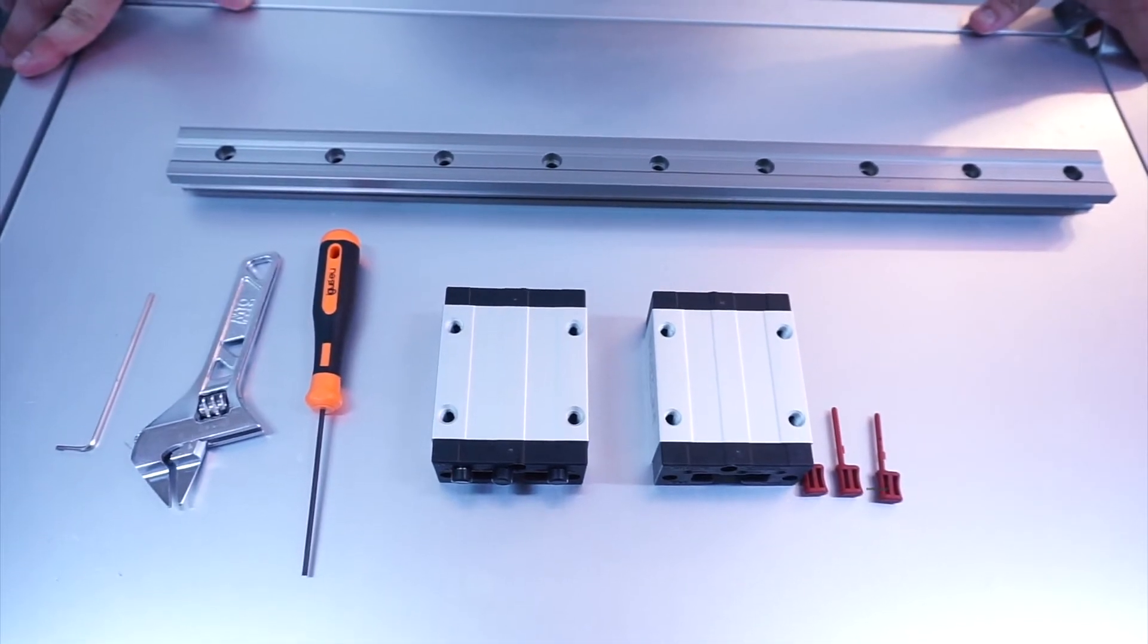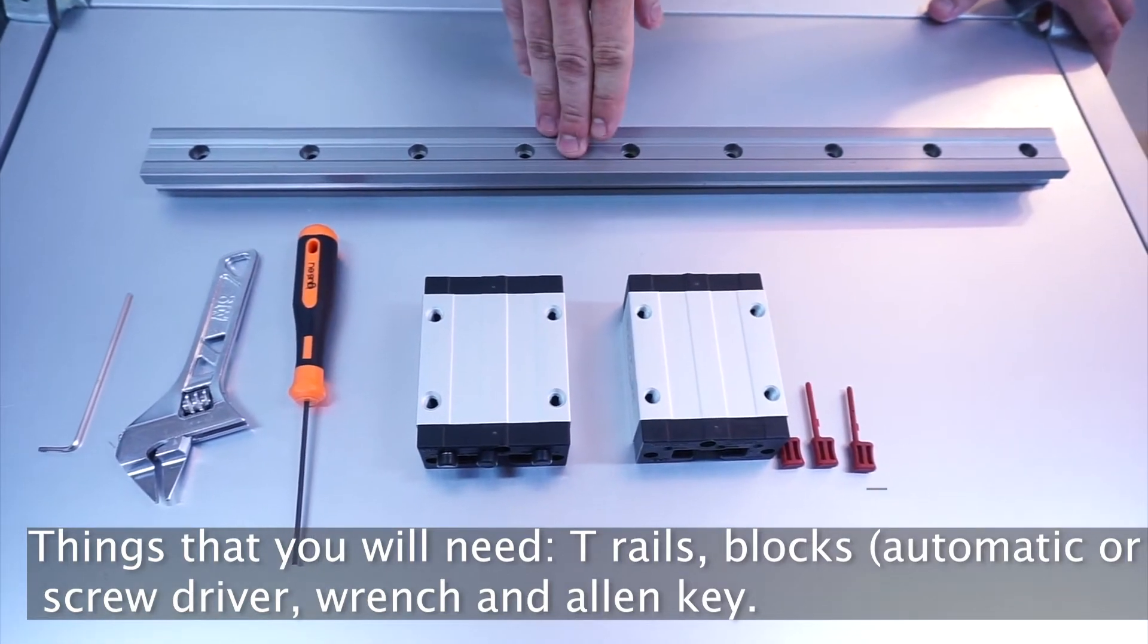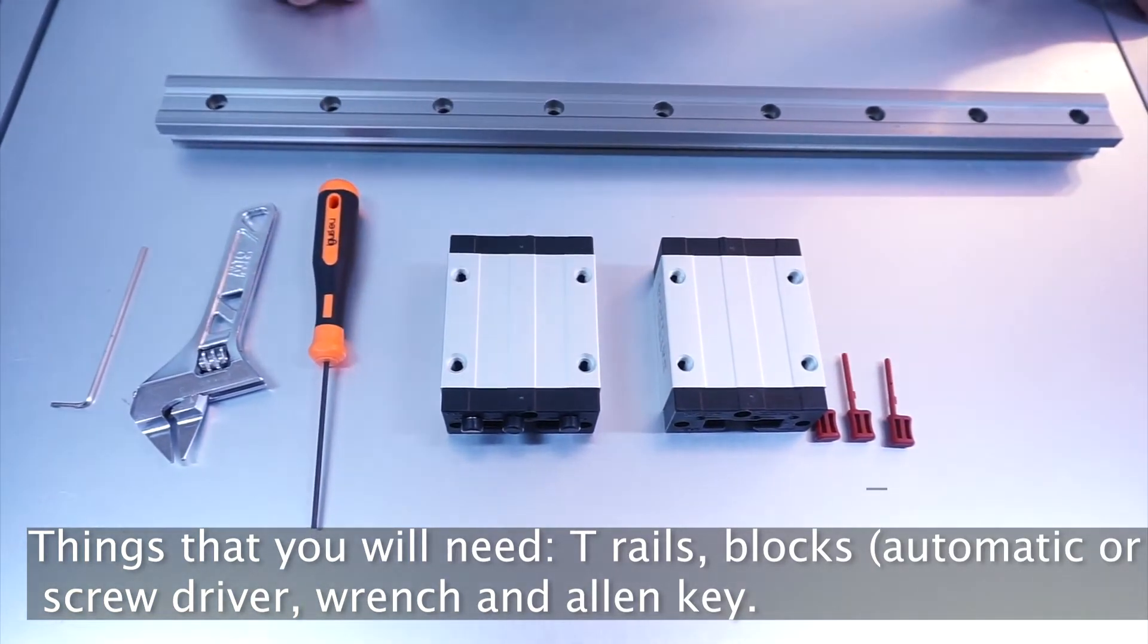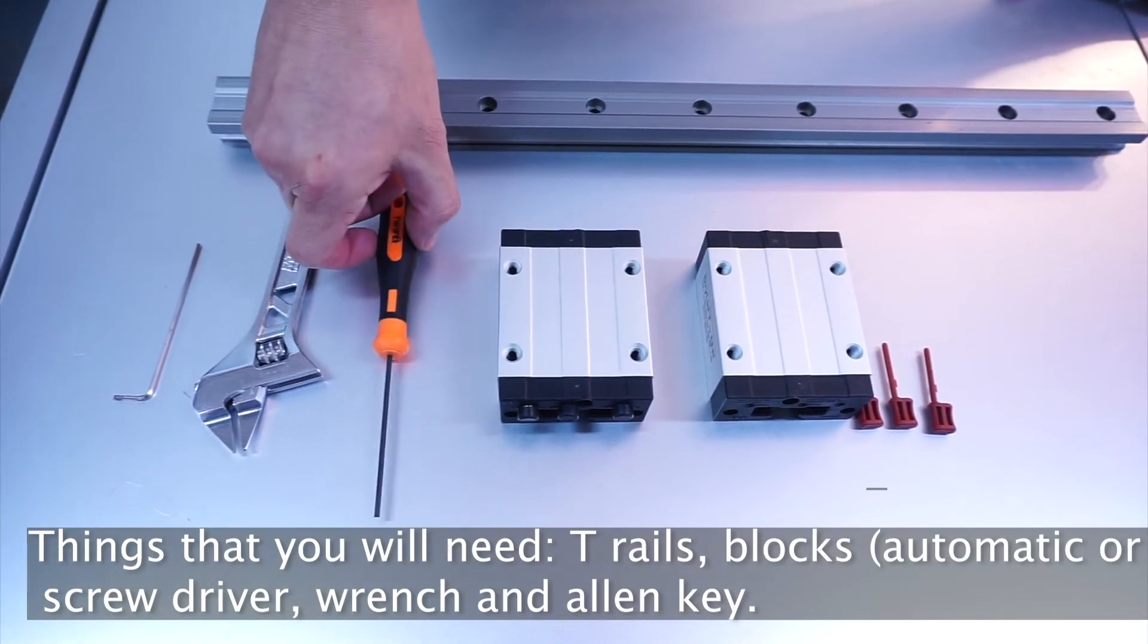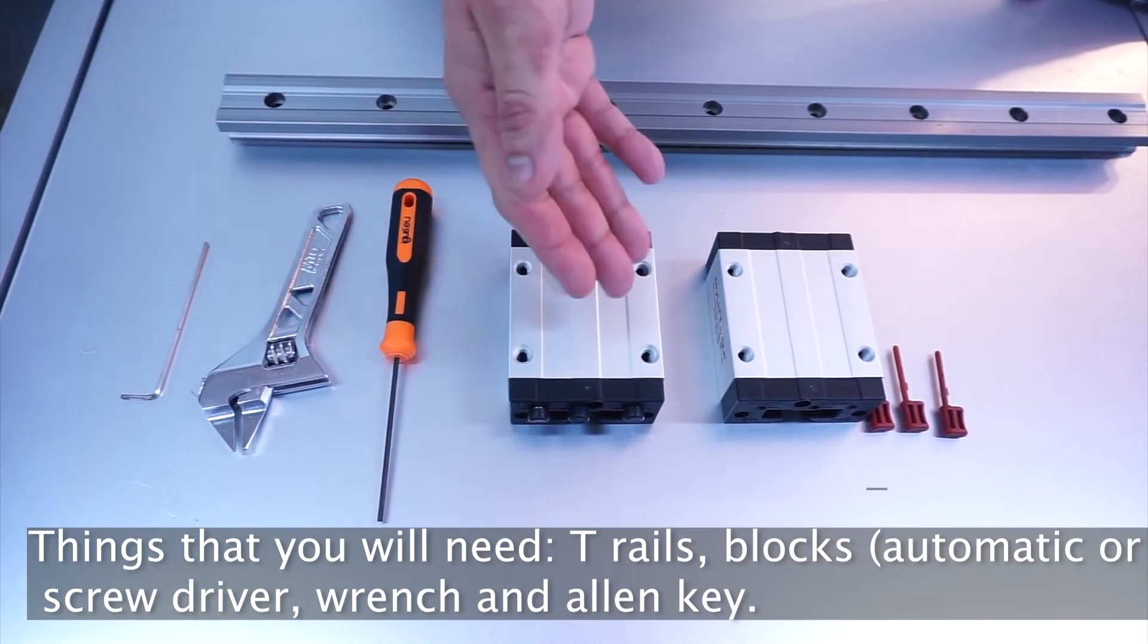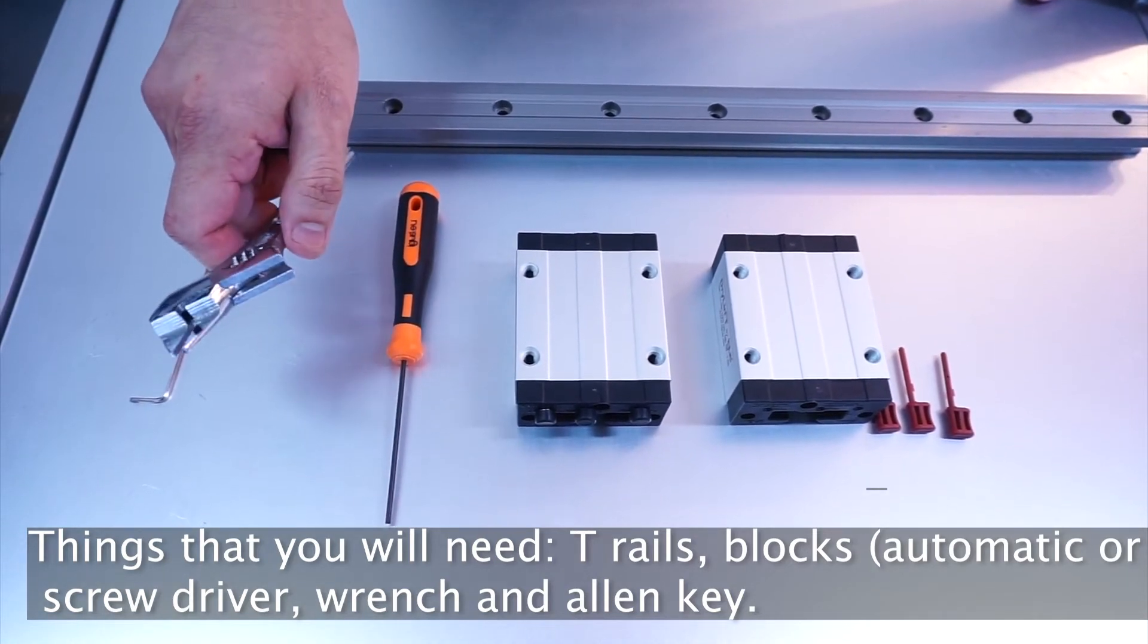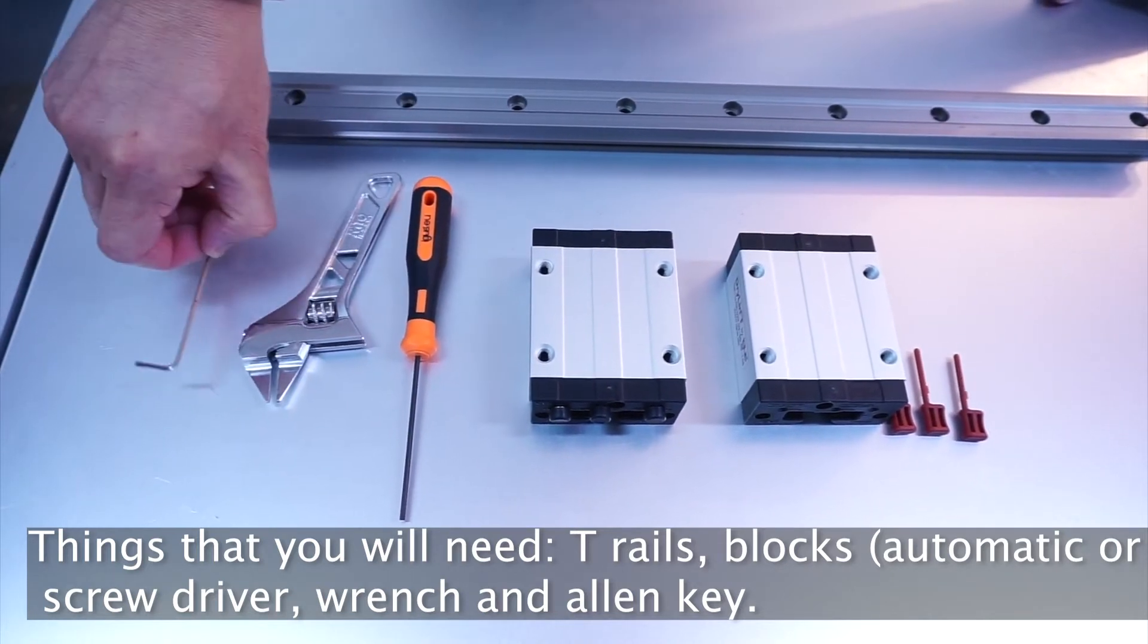Now to assemble our DryLint system, we need the T-rails, we need the blocks which is either the automatic blocks or the manual blocks. Next you might need a flat screwdriver, a wrench - either you have the correct size for the individual blocks that you selected or like me, have an adjustable one so that I don't have to go and hunt my toolbox for the right one - and an Allen key.